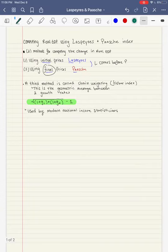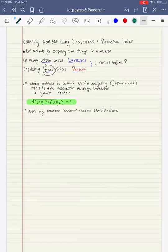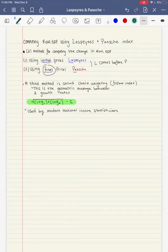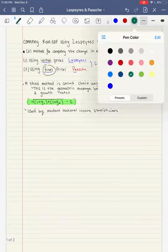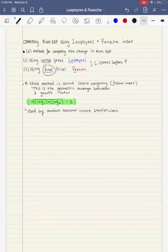Also, something we're going to talk about in this video is a third method that is used by modern national income statisticians. And this is called chain weighting, also known as the Fisher Index. And this is when you take the geometric average between two growth rates. And this can be seen right here, highlighted in green. And we'll get to that towards the end of the video.